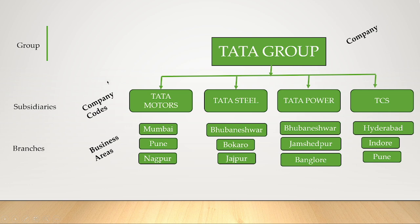So, company means a group of companies. Company codes are nothing but subsidiary companies of the group company, and branches are called business areas. This is a brief overview regarding company, company codes, and business area. I hope it is clear. Now we can move to the configuration part.